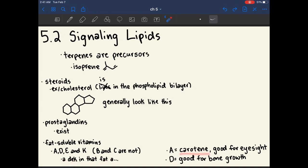An A is carotene, and it's good for eyesight. Vitamin D is good for bone growth. I think maybe good is a strong word here. It's like if you don't have these, then you won't have eyesight and you won't have bone growth.